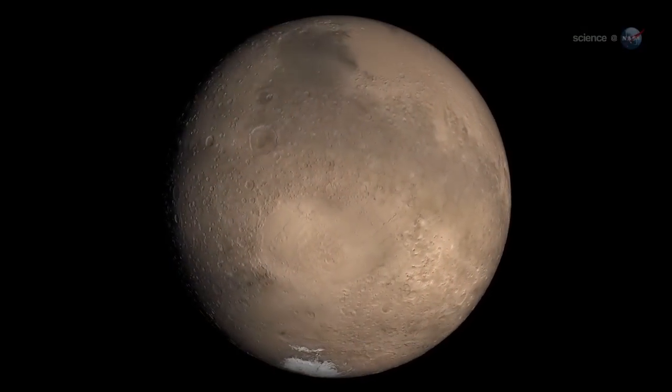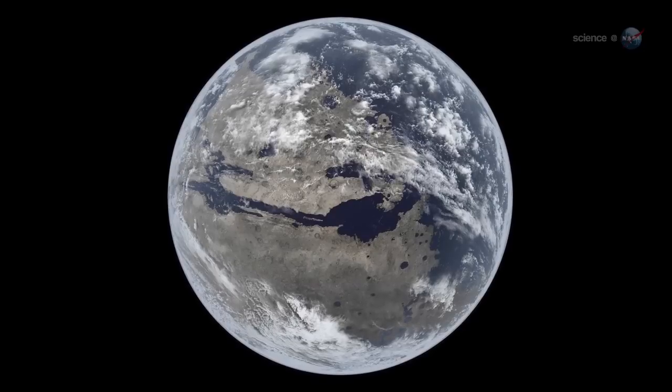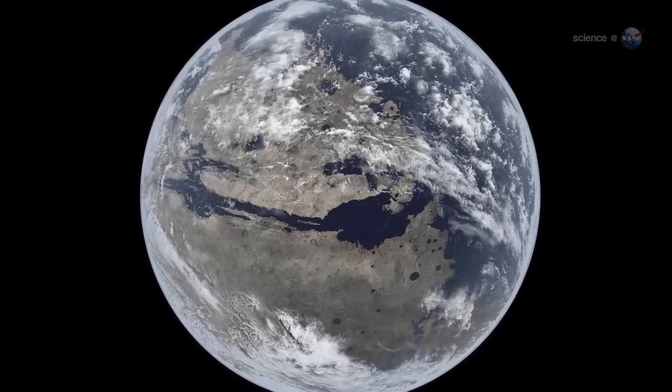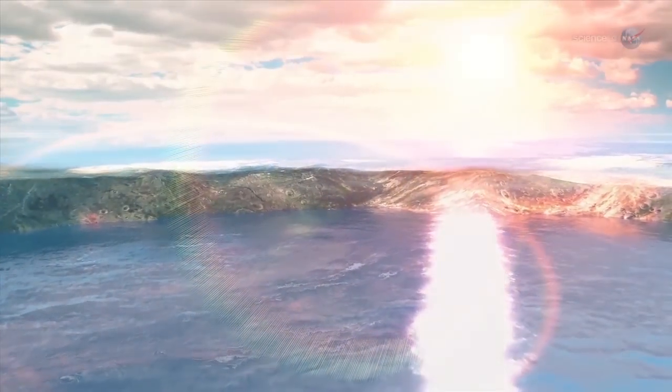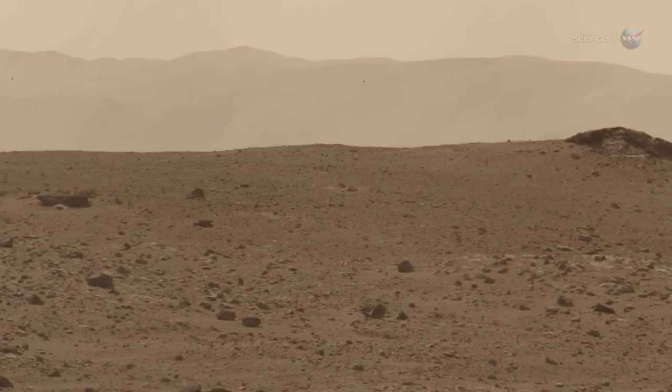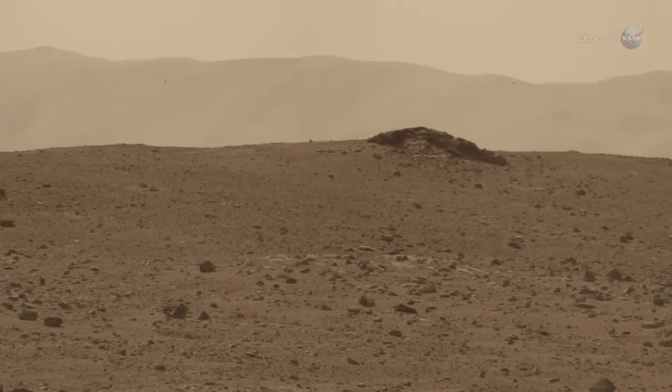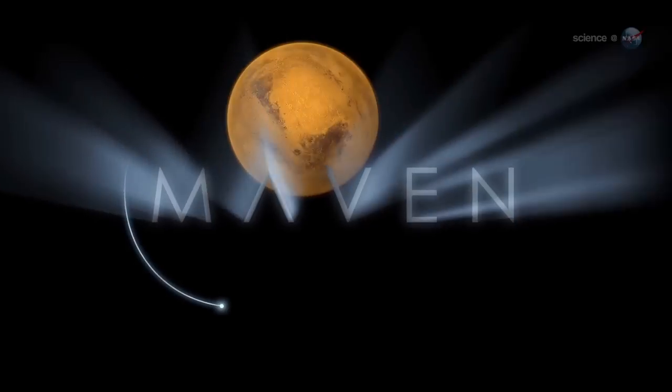MAVEN is on a mission to investigate a planetary mystery. Billions of years ago, Mars was blanketed by an atmosphere massive enough to warm the planet and allow liquid water to flow on its surface. Life could have thrived in such an environment. Today, however, only a tiny fraction of that ancient air remains, leaving Mars a desiccated wasteland. What happened to the atmosphere of Mars?